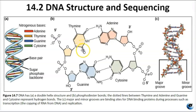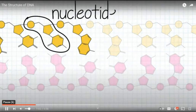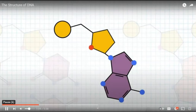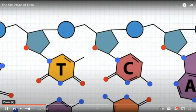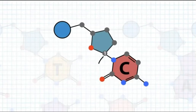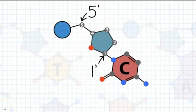A only goes with T and C only goes with G. The major and minor grooves work as binding sites for DNA-binding proteins that work during transcription and replication. Each strand is a polynucleotide made up of many individual nucleotides. A nucleotide has three components: the 5-carbon sugar, a phosphate group, and one of four possible nitrogenous bases — adenine, guanine, thymine, and cytosine. The nitrogenous base is always attached at the 1' carbon of the sugar, with a phosphate between the 5' carbon of one sugar and the 3' carbon of the neighboring sugar.